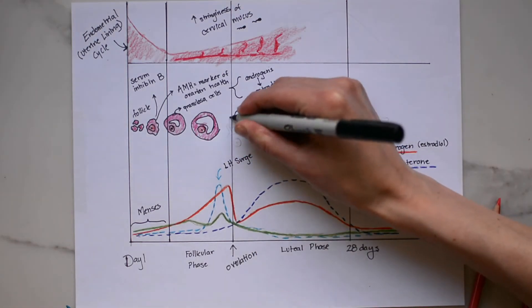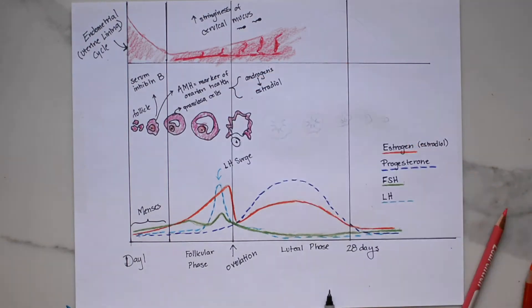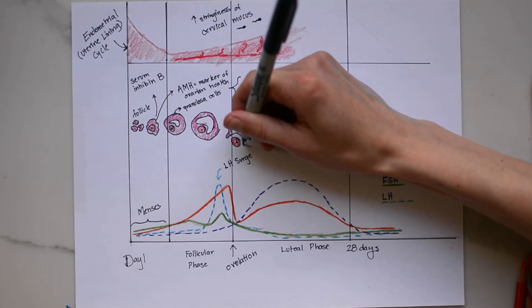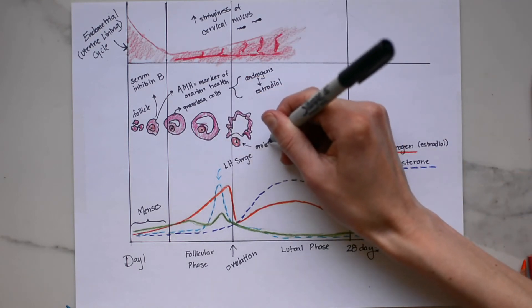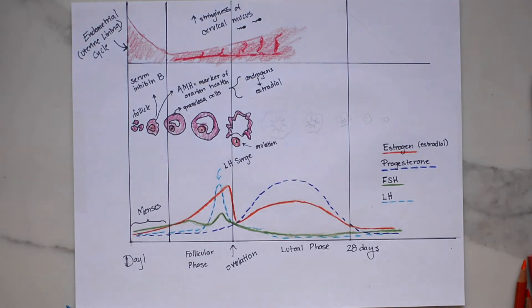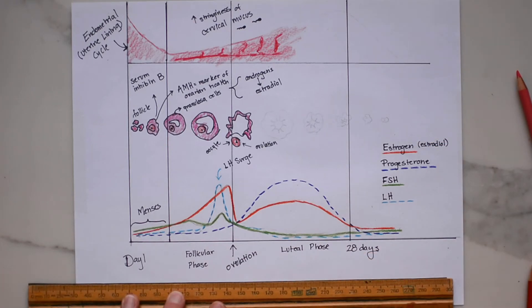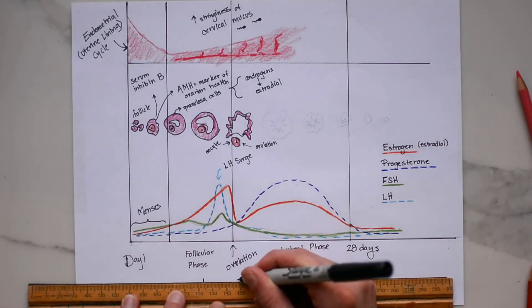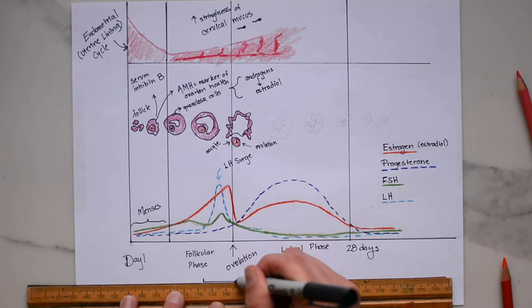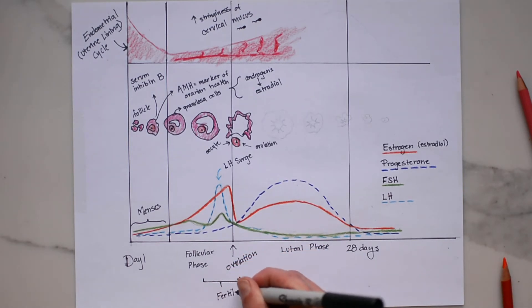Ovulation does cause slight pain for some women. It's often described as a one-sided sharp or dull cramp and a fun fact: medically it is referred to as mittelschmerz which in German means middle pain. So if you are trying to get pregnant knowing when you ovulate is really important. Many women use urinary LH strips to determine when they've ovulated and the LH strips tell you when you start to peak right when that LH is elevated. So it's important to determine when in your cycle you're ovulating and to plan intercourse such that the chances of the egg being fertilized is the highest.